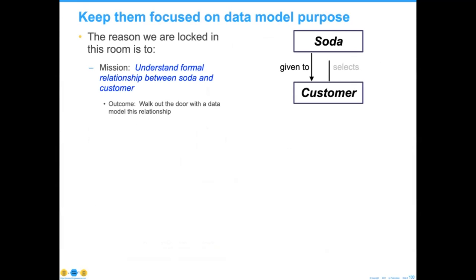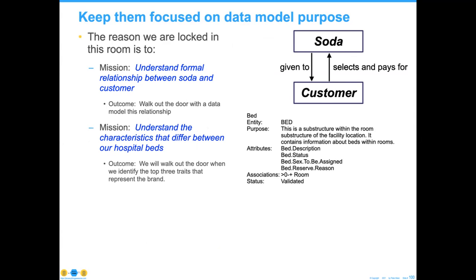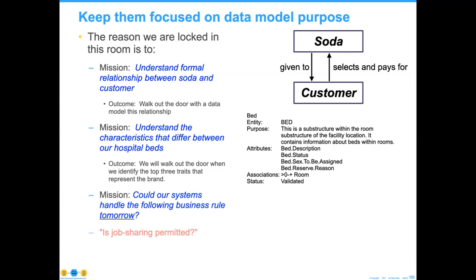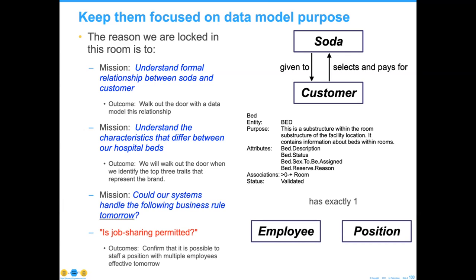For example, if I say a soda is selected by an individual, we understand the formal relationship between soda and customer. And the goal is to come up with that — oh, we forgot to have them pay for it. That would have been important. Here's another one: bed. The purpose statements — we want to make sure that the bed is going to have some sort of gender code assigned to it. Even though beds are not necessarily gender specific, the bed sex to be assigned says they're going to make that a rule. And I already mentioned job sharing — we'd like to do that, but we can't with the existing system because it does not permit it.